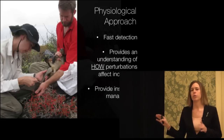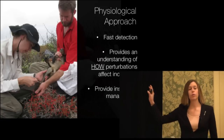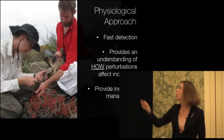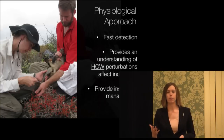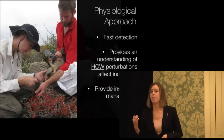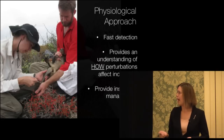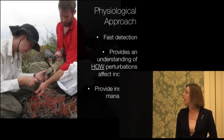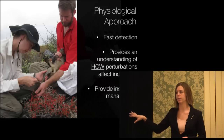Now, in combination with traditional methods, this sort of physiological approach has some real advantages. It allows for fast detection — we don't need to wait generations to see if that population size changes. We can tell right at the instant that we're measuring, well a week later after we run the assays in the lab, whether or not something different or interesting is going on. It also gives us an idea of the mechanism — an understanding of how these changes might be affecting the individuals. And this understanding of how, I think, provides much better insight for how to better manage populations in the wild.